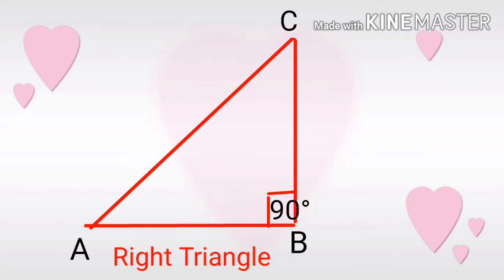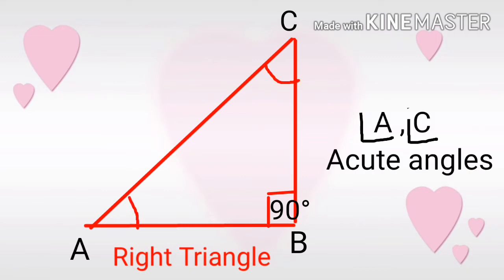Let us consider a triangle ABC with 90 degrees at angle B. Then Angle A and Angle C are acute angles, that is less than 90 degrees. So if we know any of the acute angles and any of the sides, we can find other angles and other sides using trigonometric ratios.